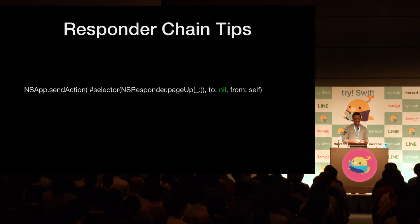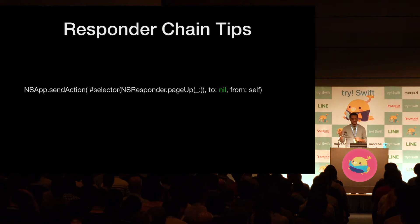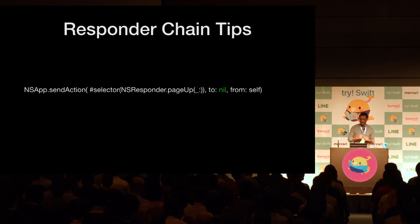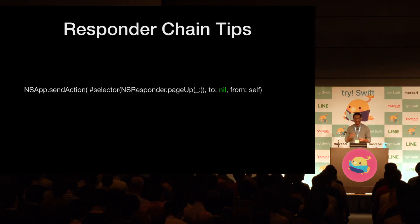You can also send messages through NSApplication or UIApplication to nil. This will have your application walk the responder chain looking for a responder who can handle the message. This is great for decoupling your classes, since the object using this doesn't need to care about types or whether the other object exists. It only needs to trust that the object which handles that event exists somewhere in the app.